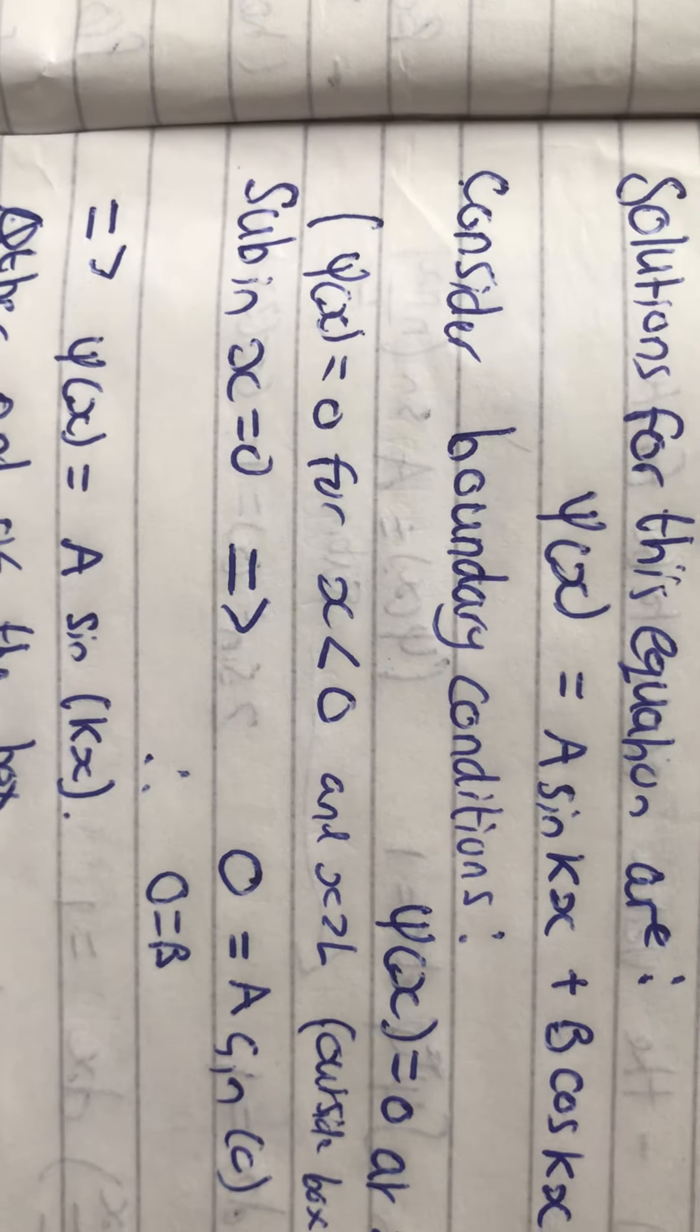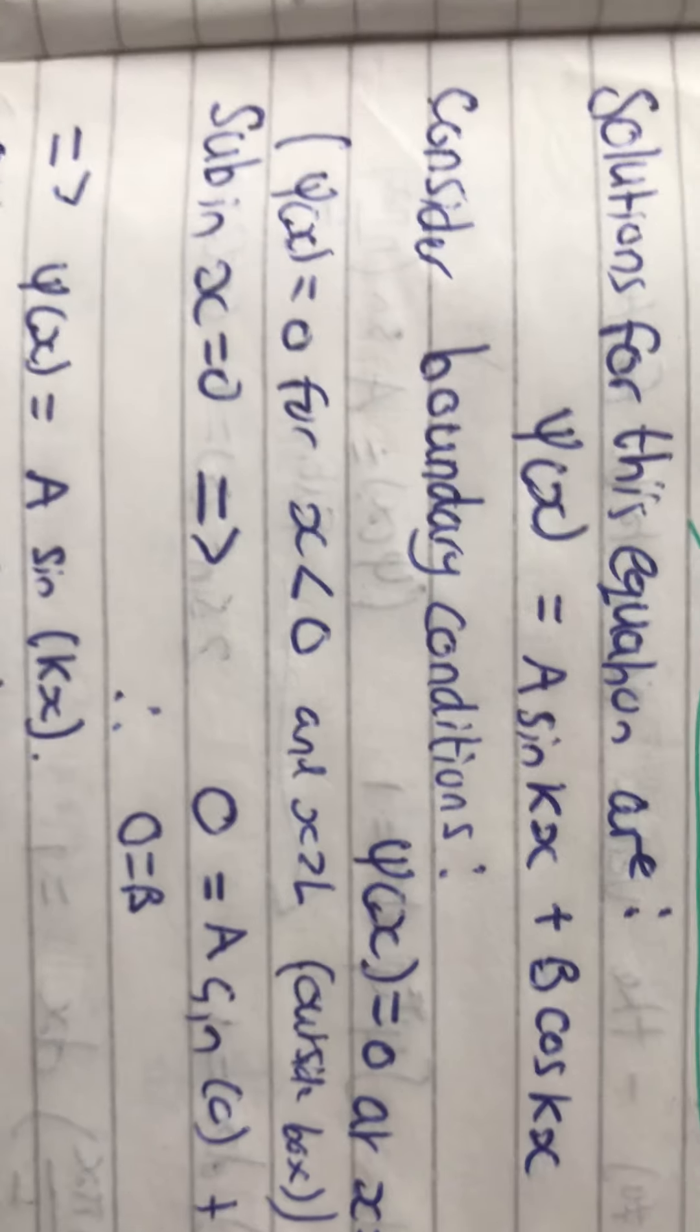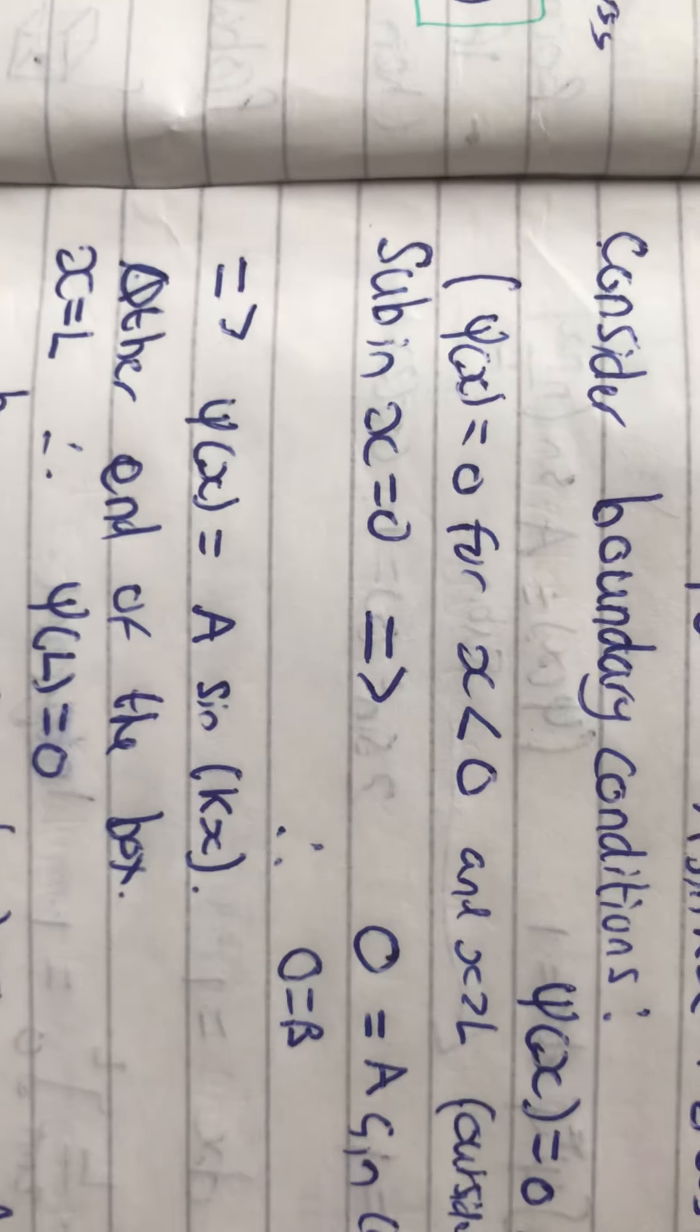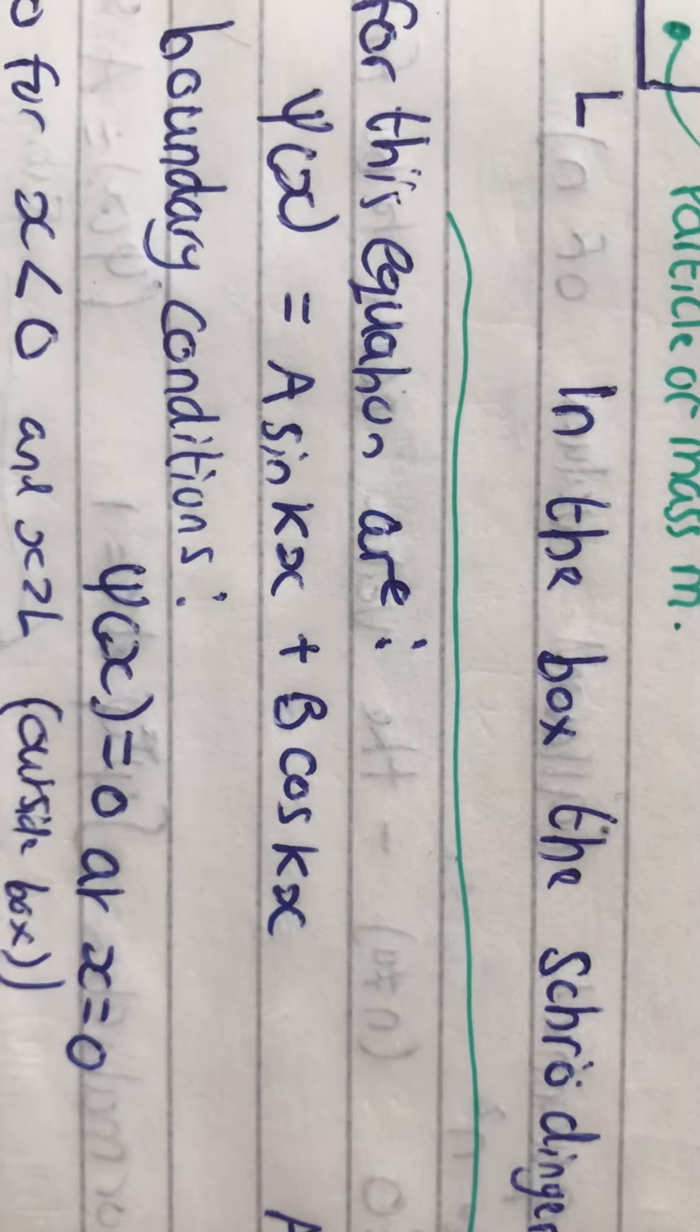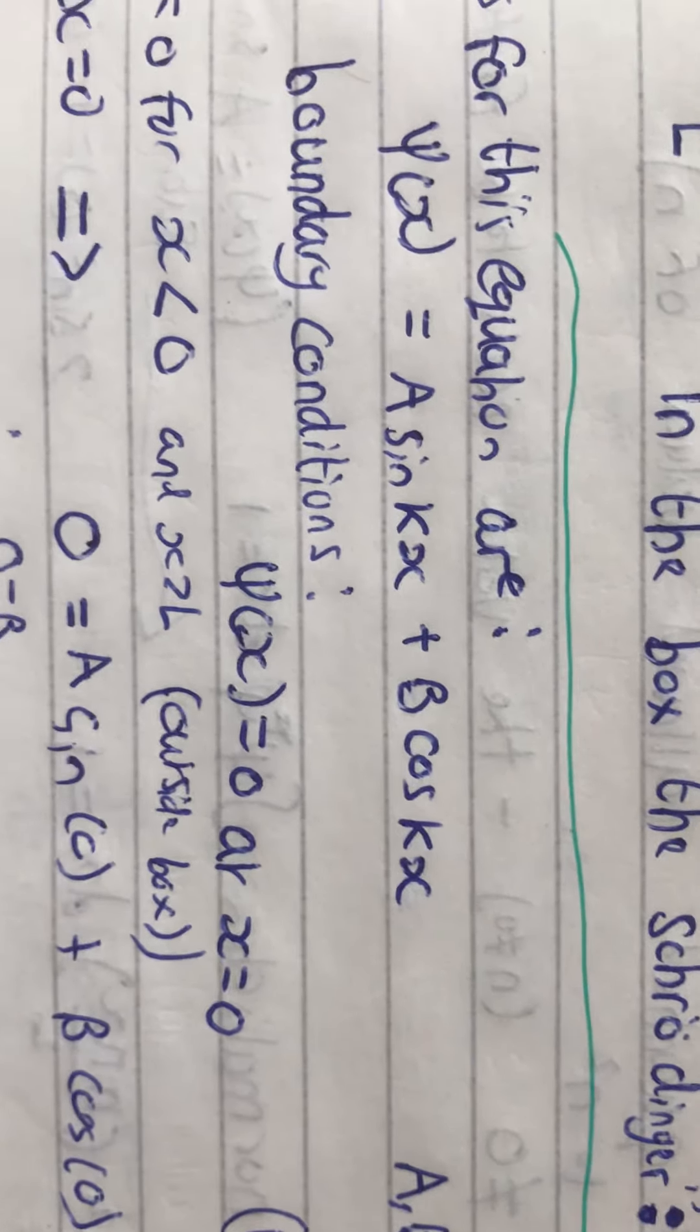And therefore, we can say that b equals 0. And therefore, we can say that the wave function is equal to a sin(kx) because the cos function is gone, essentially.